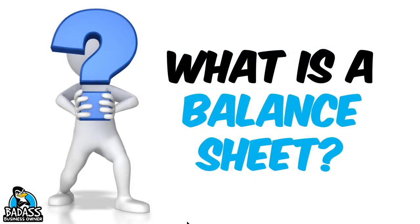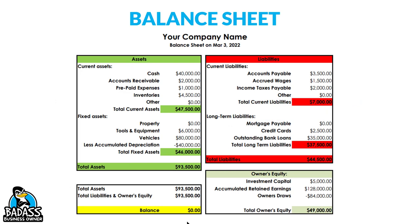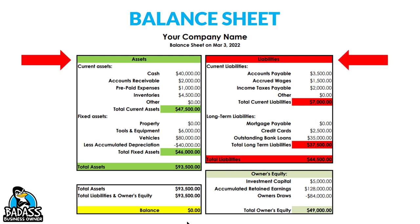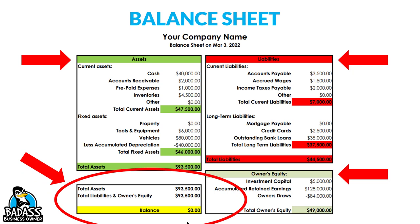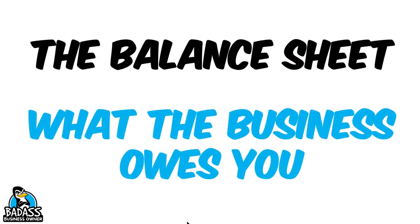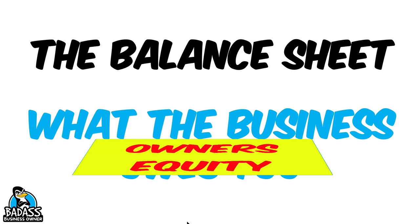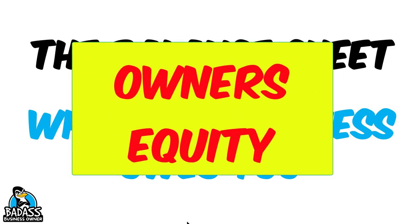First, what is a balance sheet? A balance sheet is basically a one-page document that states all of the assets of your business, all of the liabilities of your business, and finally all the money that is allocated to the owner's equity. It is called a balance sheet because your assets — what the company owns — will equal your liabilities — what the company owes — plus the money owed to the owners, known as owner's equity. Your balance sheet will show you how much your business owes you, the business owner. The balance sheet calls this owner's equity.